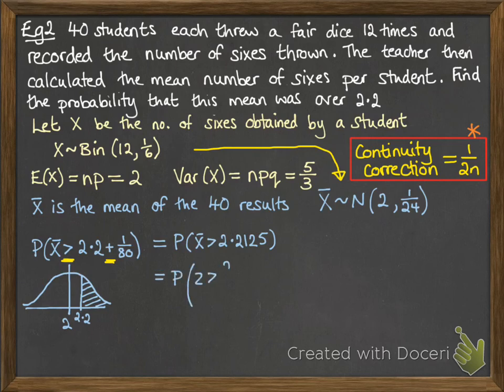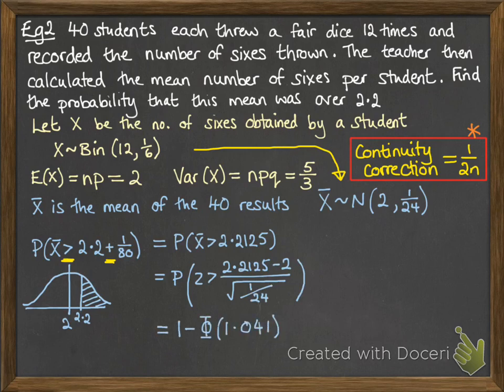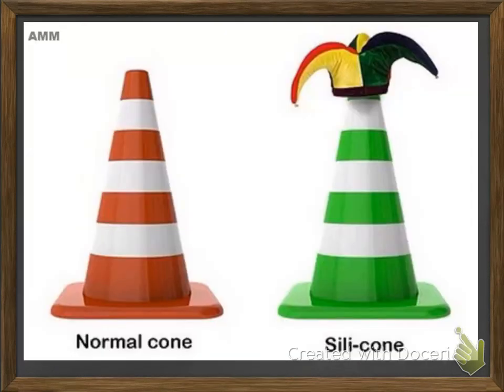Now moving on from there, finding our probability looks like this, and carrying on that calculation, we get our final probability is 0.149. If you're a little bit vague about continuity corrections, it would be a good idea to go and look up the approximations we've done before with things like approximating a binomial with a normal distribution and refresh your memory of that. Thank you.